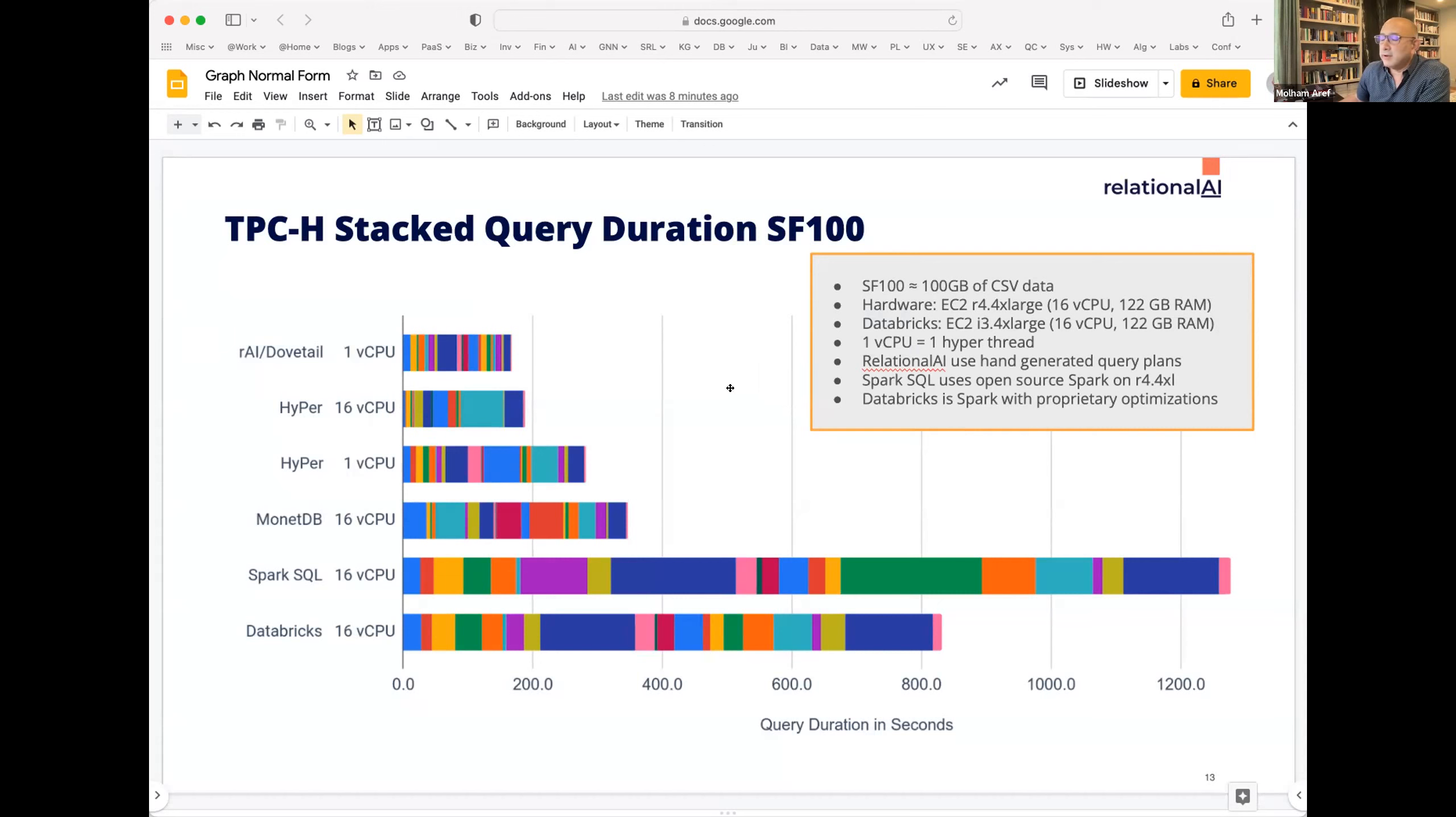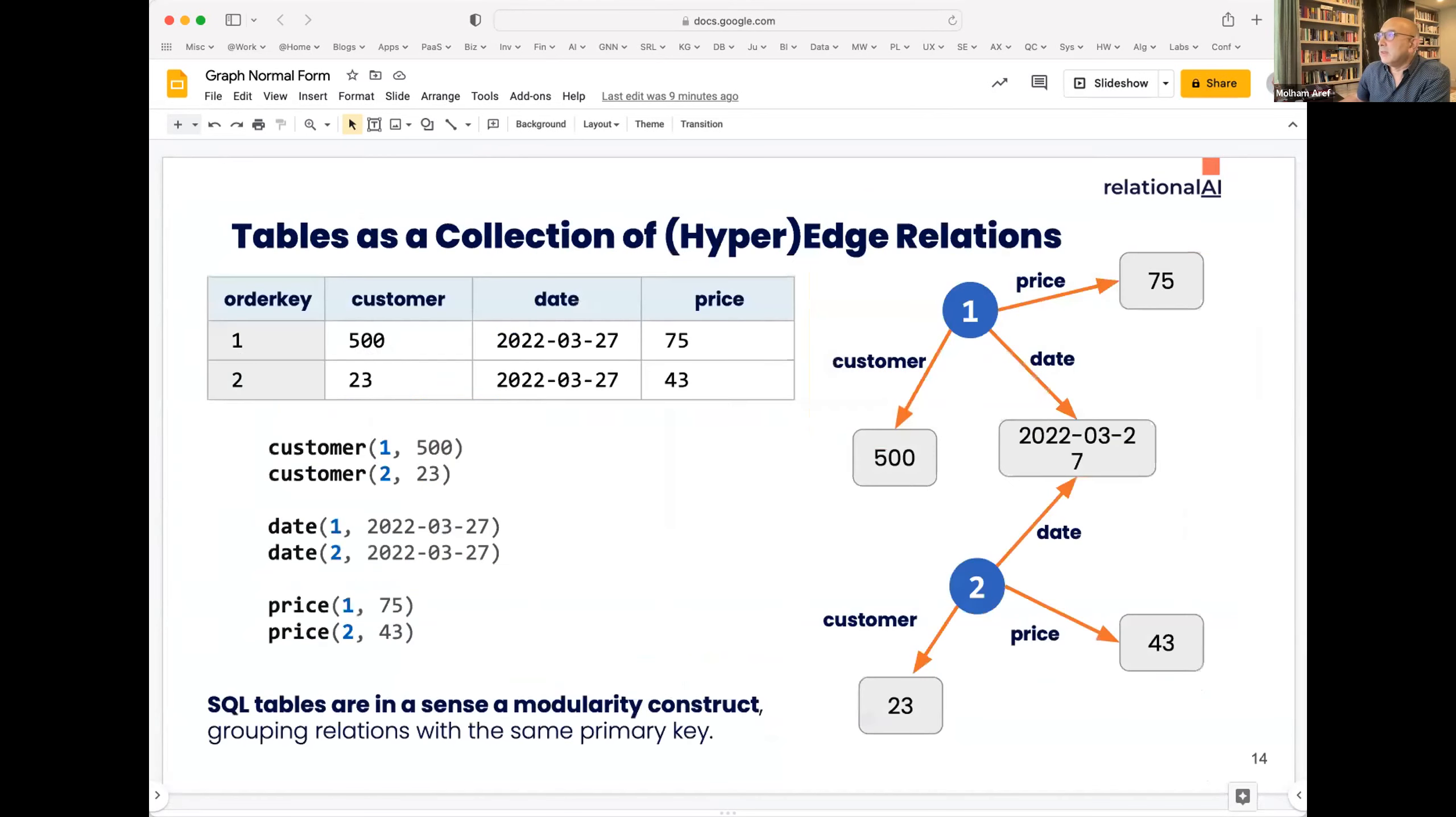We've convinced ourselves that this can perform really well. This benchmark results are a couple of years old now. We'll refresh and update. And so we try to show our progress here on performance in our production system. The insight here is tables are really collections of hyper edge relations. So this simple table here might have an order key and you can see a graph representation of this where the node representing the order has a price, has a date, has a customer. This is another node representing another order and it can point to another date. So tables are really a modularity construct on top of these individual graph normal form relations.